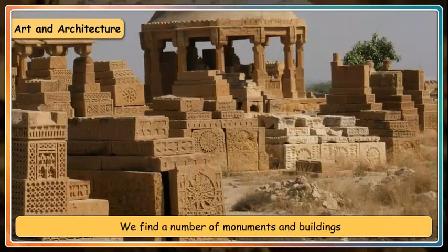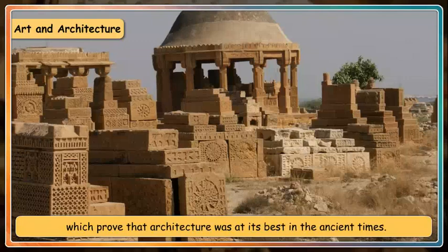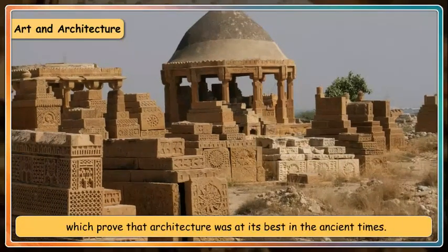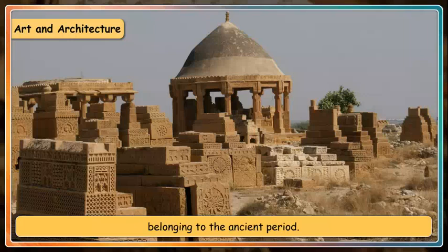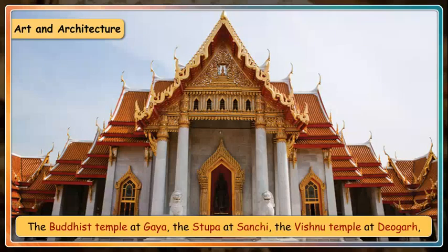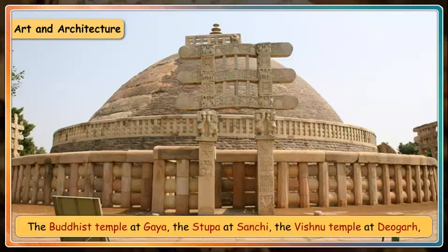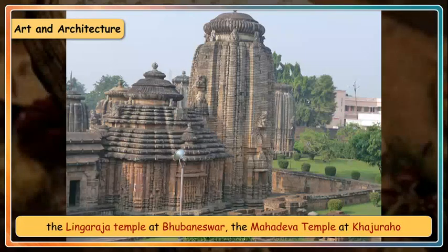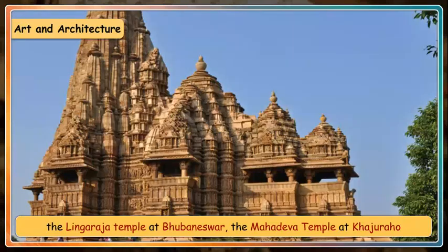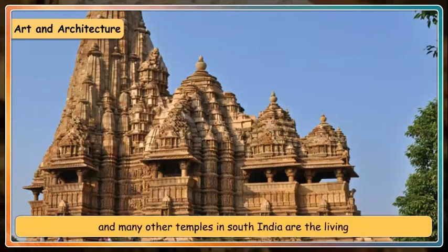We find a number of monuments and buildings that prove architecture was at its best in ancient times: temples, stupas, monasteries and other monuments. Notable examples include the Buddhist temple at Gaya, the stupa at Sanchi, the Vishnu temple at Devgarh, the Lingaraj temple at Bhuvaneshwar, the Mahadeva temple at Khajuraho, and many other temples in South India.